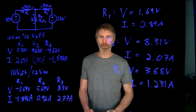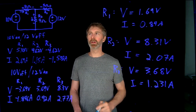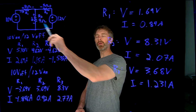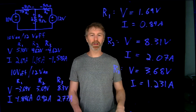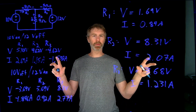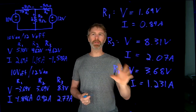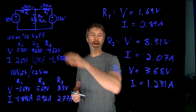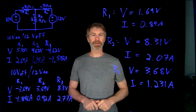That was an example of the superposition principle in action for a simple circuit with two voltage sources. We analyzed two separate circuits, then combined the results to get the voltages and currents in the actual original circuit. Thanks very much for watching — see you in the next video.